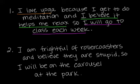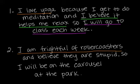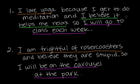On to the next one. The second sentence: I am frightful of roller coasters and believe they are stupid, so I will be on the carousel at the park. The affective component is I am frightful of roller coasters — fright is an emotion, it's a fear. The behavioral component is I will be on the carousel at the park. The word be indicates a behavior, an action — because you're afraid of roller coasters, you're going to be somewhere else, and that's going to shape your attitude.